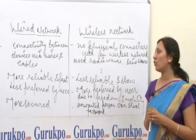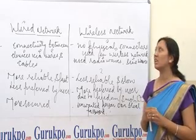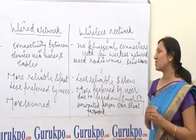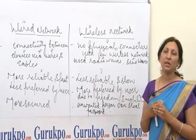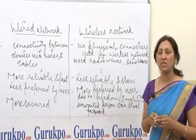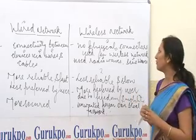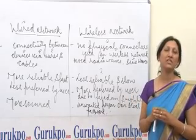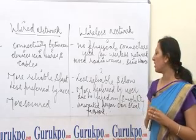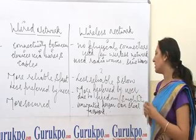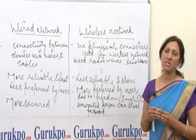The fourth difference is that the wired network is more secure than the wireless network because there is direct connectivity between the computers through wires and cables. But in a wireless network, there is no physical connectivity, which is why unwanted people can steal passwords, intercept communications, and use them for their personal purposes.